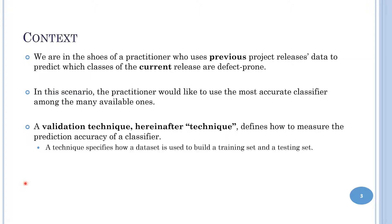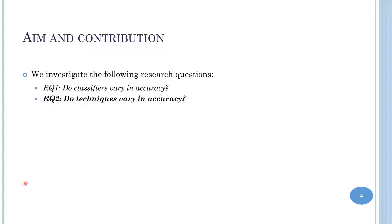A technique specifies how a dataset is used to build a training set and a testing set. The aim and contribution of this study is to answer two research questions. The first is: do classifiers vary in accuracy? And the second is: do two techniques vary in accuracy? If accuracy varies across classifiers, it is important to use a technique that allows us to choose the accurate classifier.